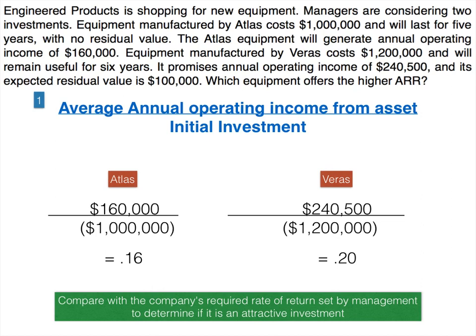We can use Form 1 — average annual operating income divided by initial investment. For Atlas, the ARR is 16%, and for Veras it's 20%, so Veras is the better of the two. However, this doesn't tell us if either is a good investment for the specific company. If the required rate of return is 25%, neither would be appropriate. If it's 18%, then Veras would be an appropriate investment.